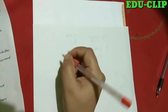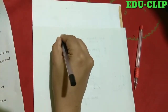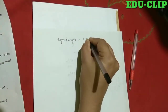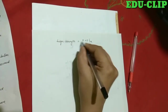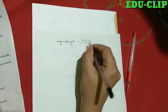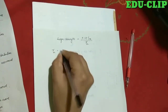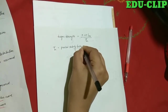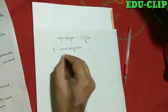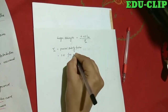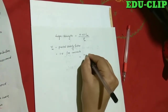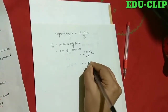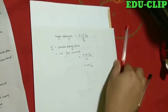For flexural strength calculation, the design strength from the curve is 0.67 FCK. To get the design strength, we divide 0.67 FCK by gamma M, where gamma M is the partial safety factor. According to IS 456, this partial safety factor value is 1.5 for concrete. So 0.67 FCK divided by 1.5 gives us 0.45 FCK, which is the design strength of the concrete.